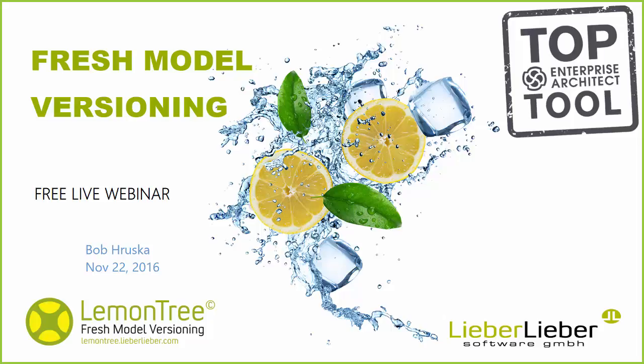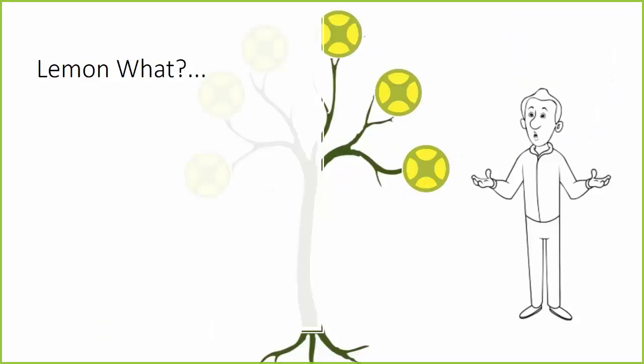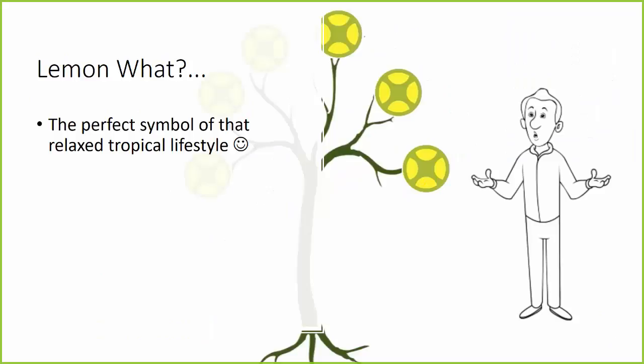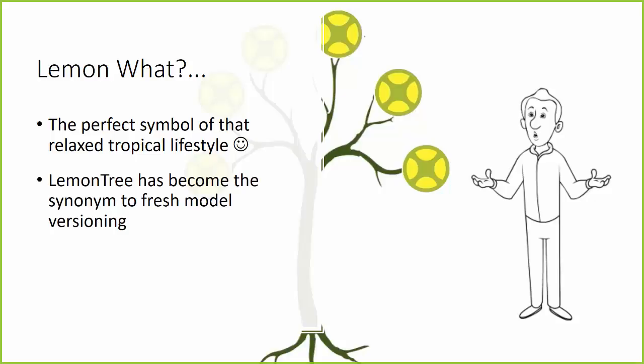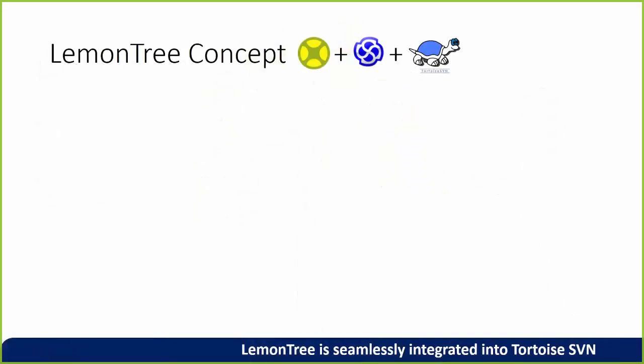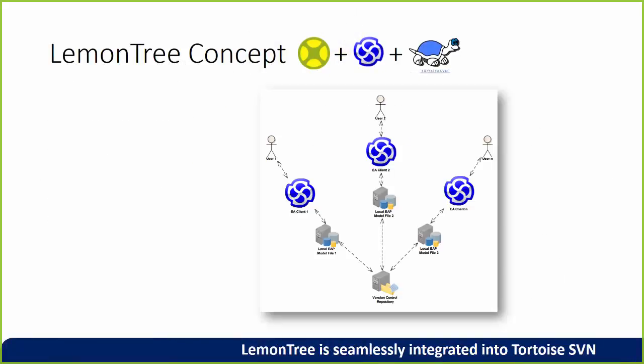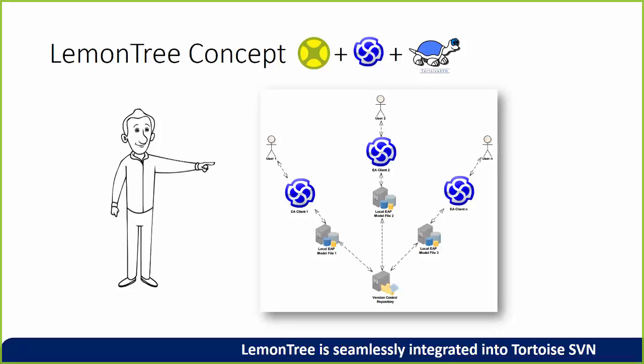It's called Lemon Tree. People have been asking me why lemon tree — well, isn't a lemon tree the perfect symbol of that relaxed tropical lifestyle we all dream of? And the tree branches represent the various model versions calling for merge. In this webinar I will show you the integration with Tortoise SVN. Lemon Tree is seamlessly integrated into Tortoise SVN like an external diff merge program, meaning that all actions related to diff, merge, or conflict resolution will be handled by Lemon Tree outside of Enterprise Architect.